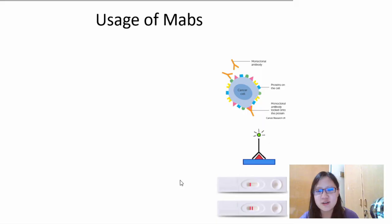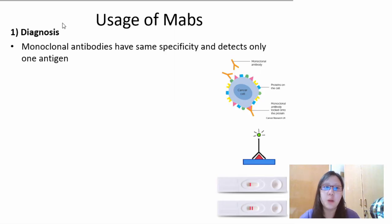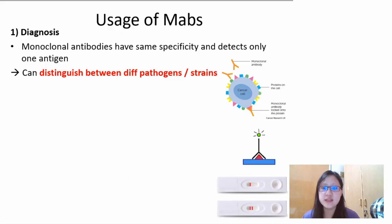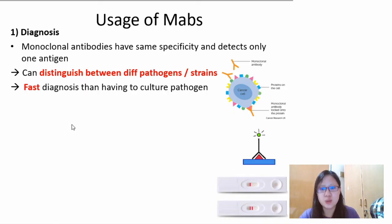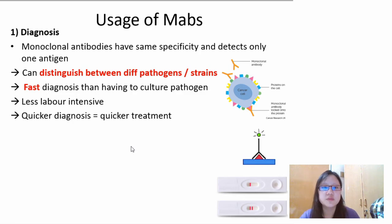Now you might be thinking: why do we need to produce this drug? It's actually useful for two things — first, diagnosis, and second, treatment. Monoclonal antibodies have the same specificity and detect only one antigen — they're all the same type of antibodies. This means they can distinguish between different pathogens, or even different strains of the same pathogen. It's very specific and very fast, because you don't need to culture the pathogen. It can detect without doing much — it's less labor-intensive. All you need is maybe some blood or some fluid sample, dip it in, and it should work. A quicker diagnosis means quicker treatment for patients, so it's a win-win.